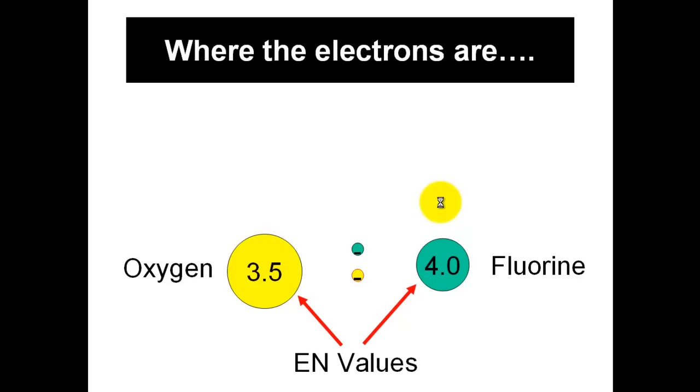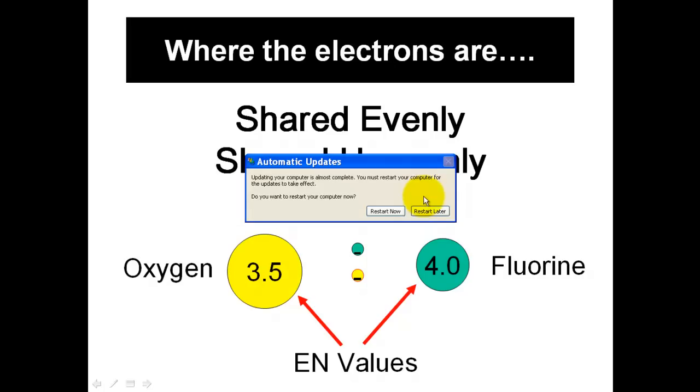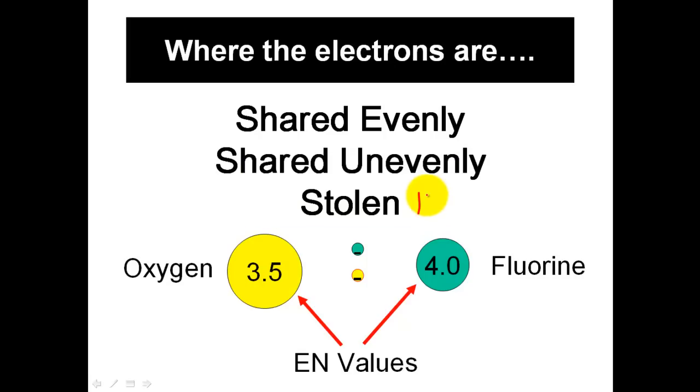Are they being shared evenly, unevenly, or actually just not even being shared? Stolen. And we've used this word in the past, transferred. We're talking about ionic bonds. So these electrons have three scenarios. They are either one, shared evenly, two, shared unevenly, or three, they're going to be stolen altogether. And that's kind of the gist of where we're going today.